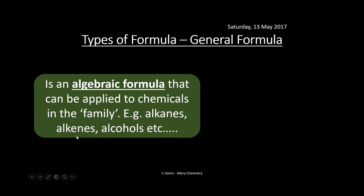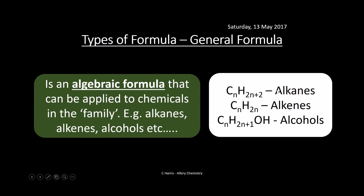So for example, alkanes, alkenes, alcohols, etc. These are general formulas: CnH2n+2, where n is just the number of carbons — this is the general formula for alkanes. Alkenes with one double bond is CnH2n. Cycloalkanes also have this formula. Alcohols: CnH2n+1OH. So basically we can use these algebraic formulas to work out the formulas of any of these.